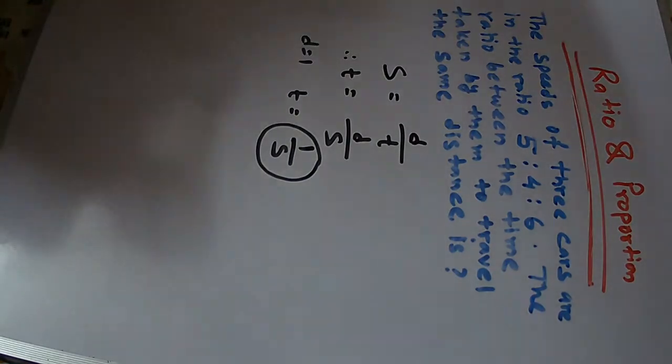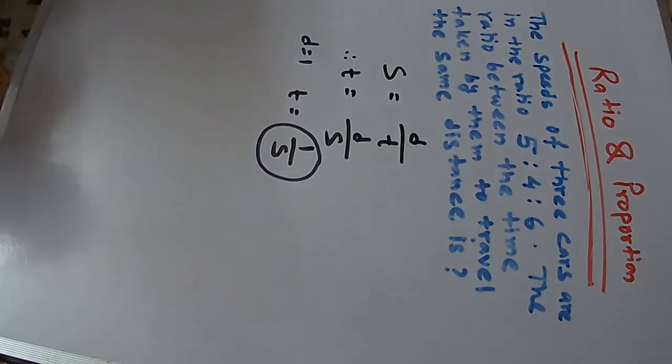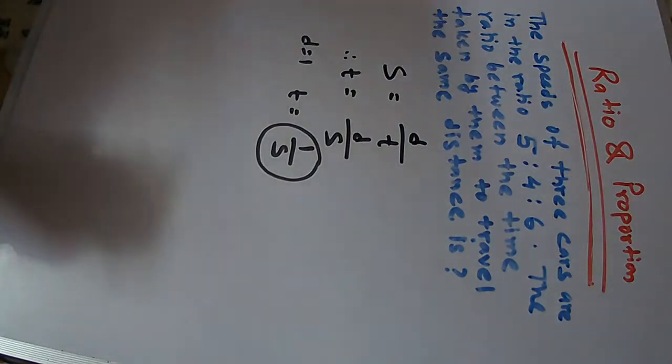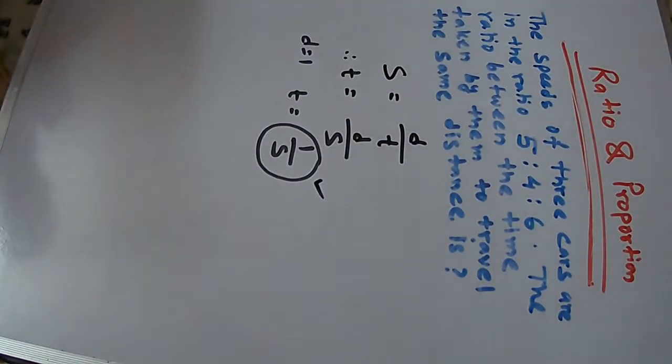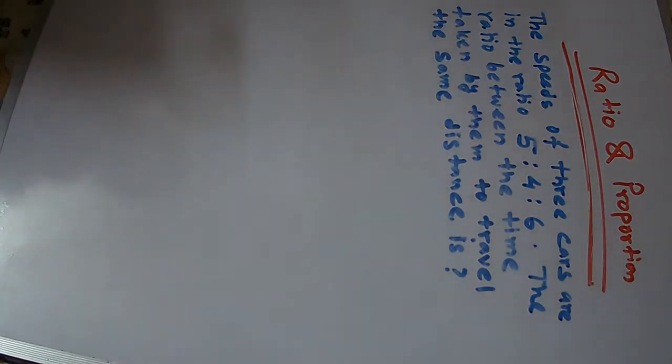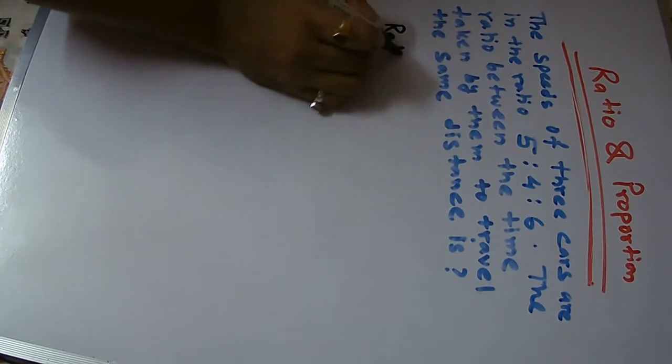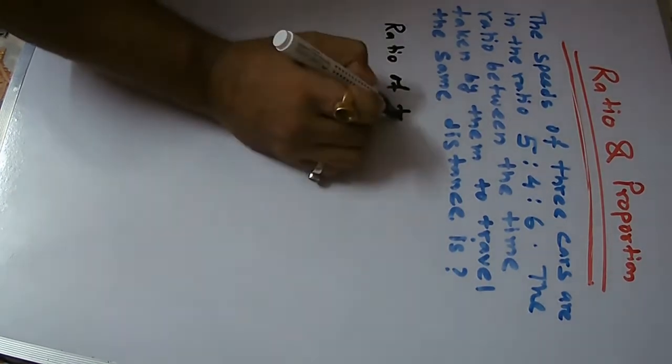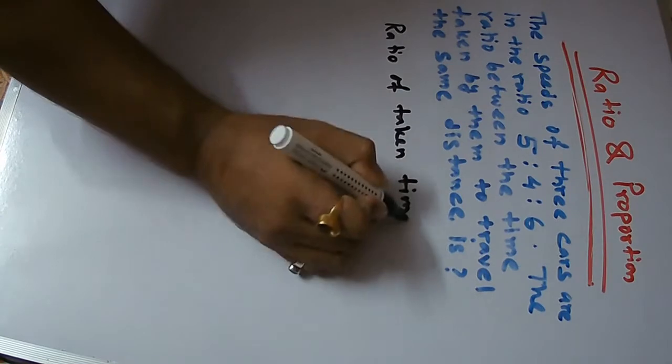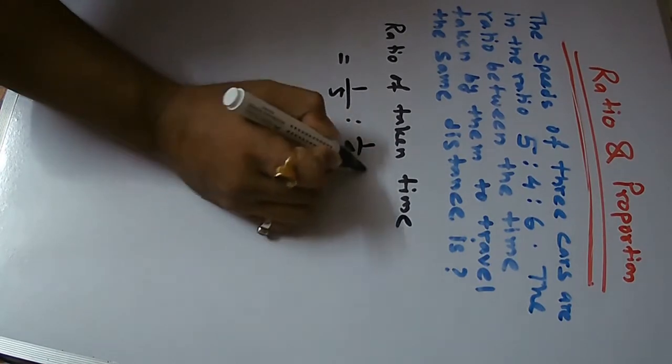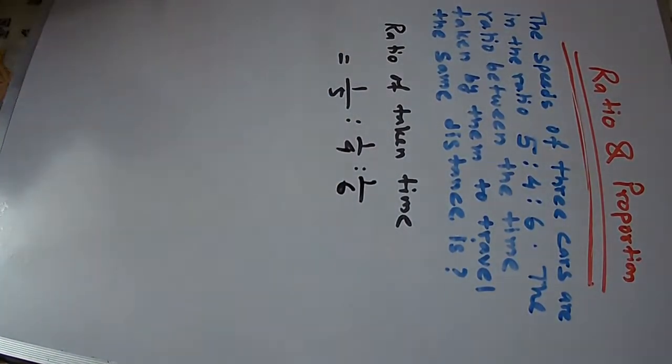So we can say t is equal to 1 by s. Therefore, the time ratio is 1 by 5 is to 1 by 4 is to 1 by 6. This is the time ratio.